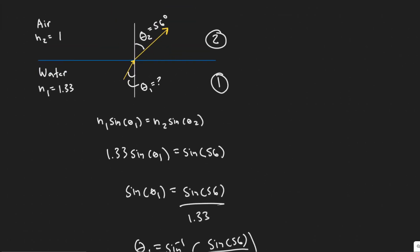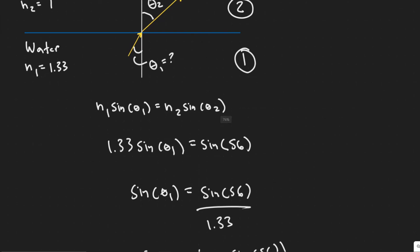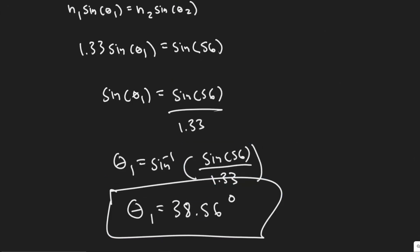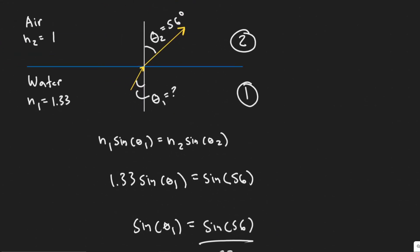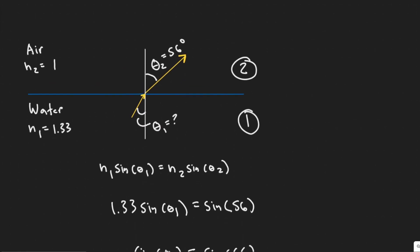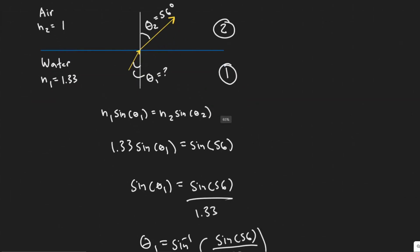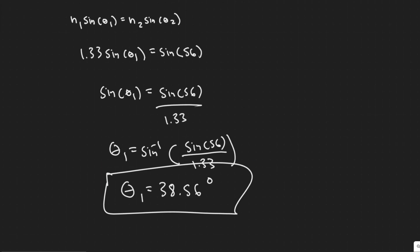A quick check: if you go from a bigger index of refraction to a smaller one, your angle should increase. Here, we went from water (n=1.33) to air (n=1), and indeed 38° is less than 56° — wait, the angle increased going from water to air. Conversely, if you increase the index of refraction, the angle decreases. The bigger the index of refraction, the smaller the angle. That's a good check to make sure you're going in the right direction.